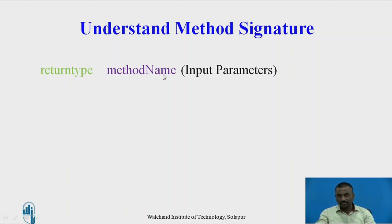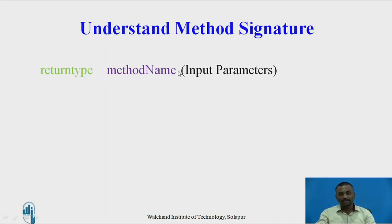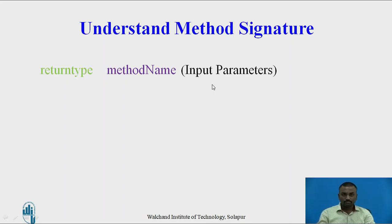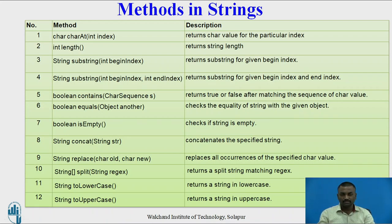First of all, we need to understand the structure of a string — how a method is defined inside strings. This is how we define any kind of method in Java: it should have a return type, a method name, and certain parameters as input. Return type can be an integer, a string, or any kind of data type. The method name should be in camel case — for example, 'm' is small and 'N' is capital. The next word immediately after should also start with a capital letter. That is a naming convention followed in Java for methods. Input parameters can be any number — zero, one, or more. This is the signature of a method in Java.